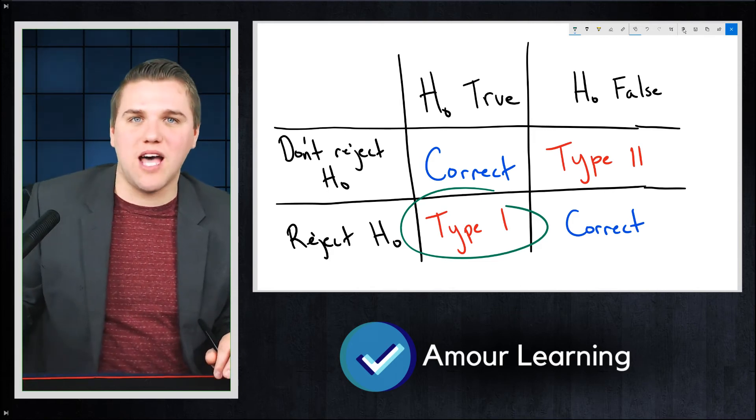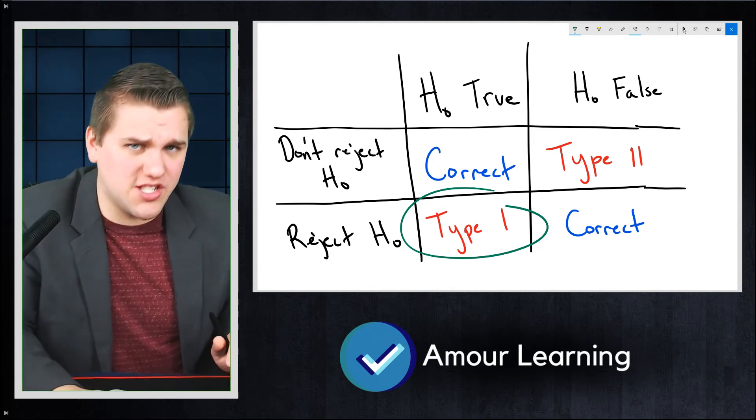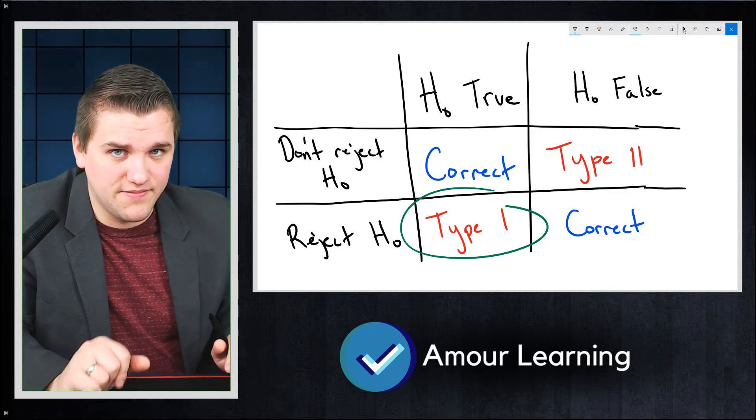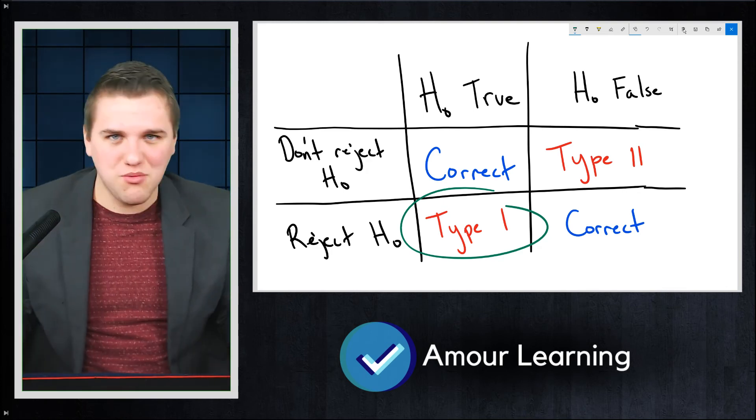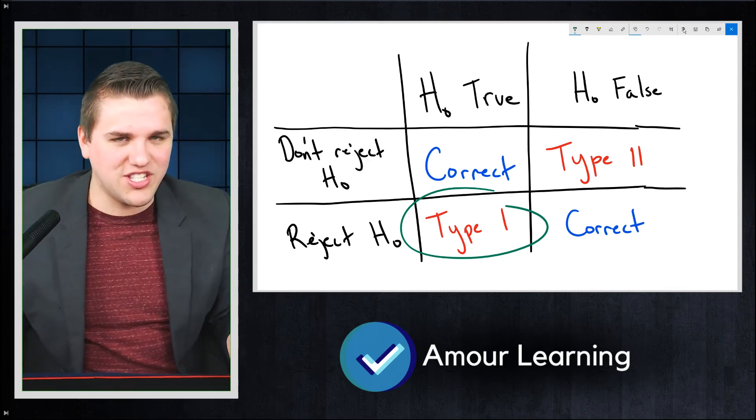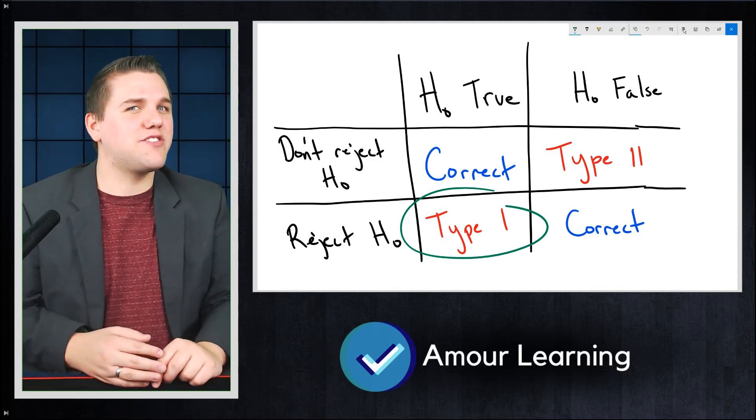For example, someone comes out and says, no, in fact, chocolate does cure cancer. Now, the null hypothesis is that chocolate doesn't cure cancer, right? That's what the scientific community would believe right now. And so to suggest that that's false, yikes, you're going to have some problems.